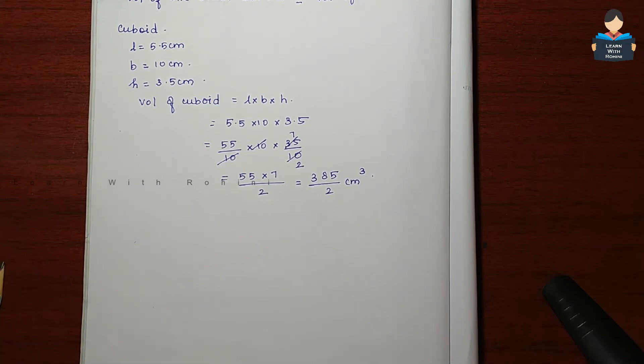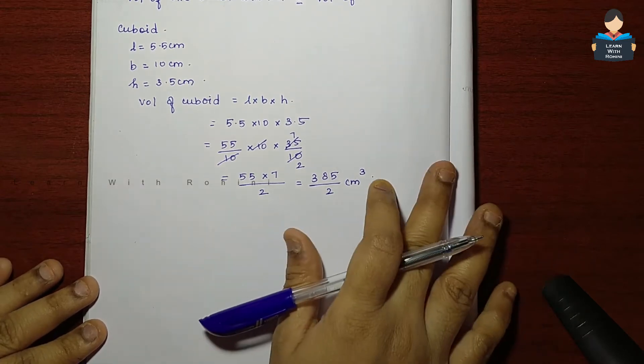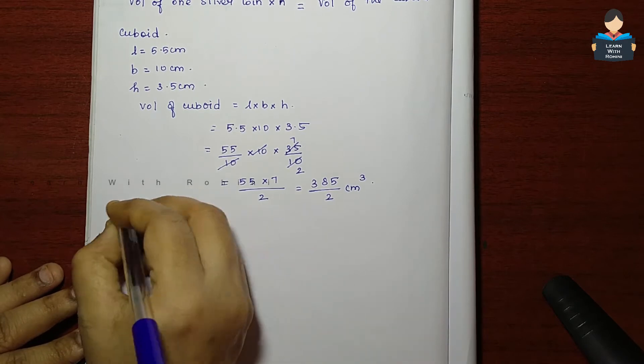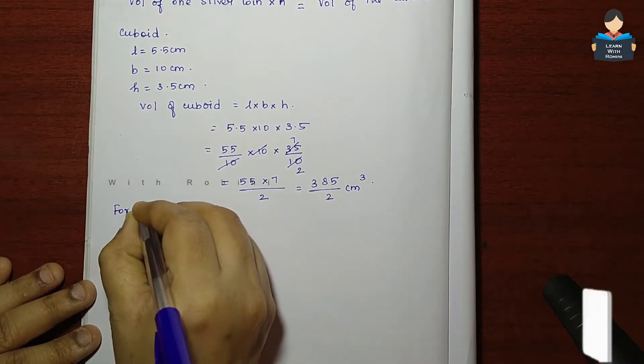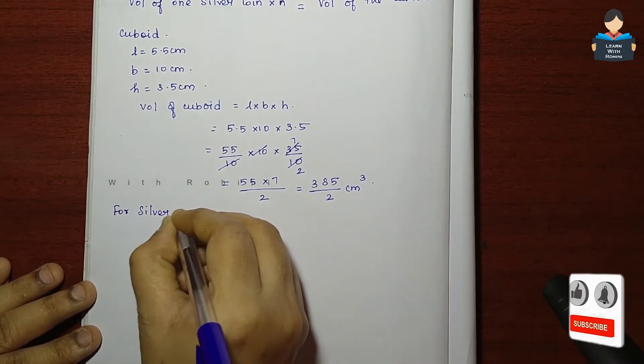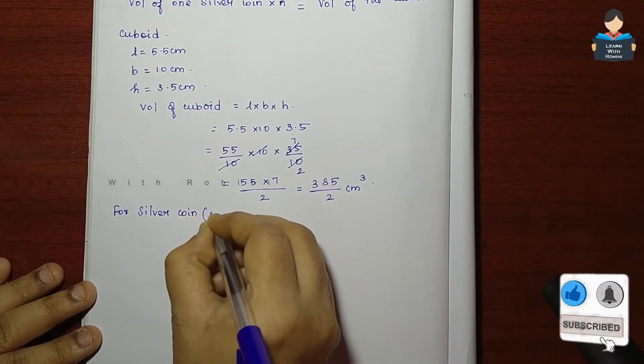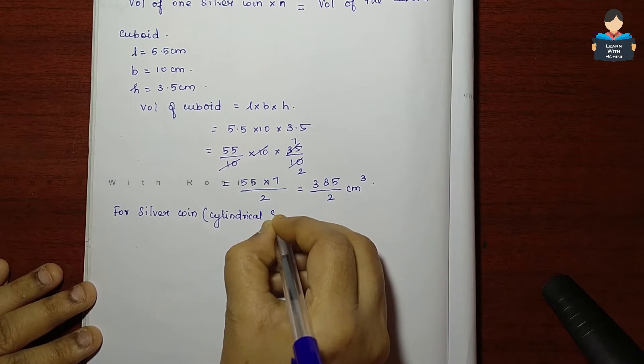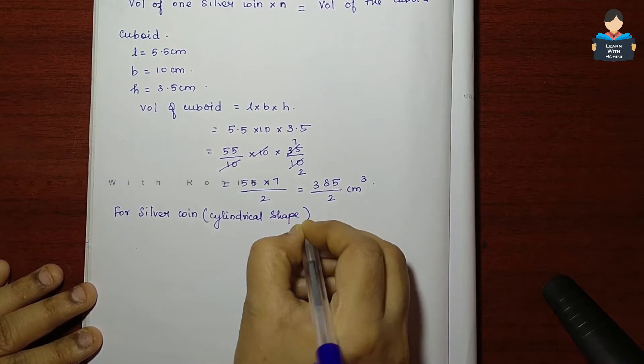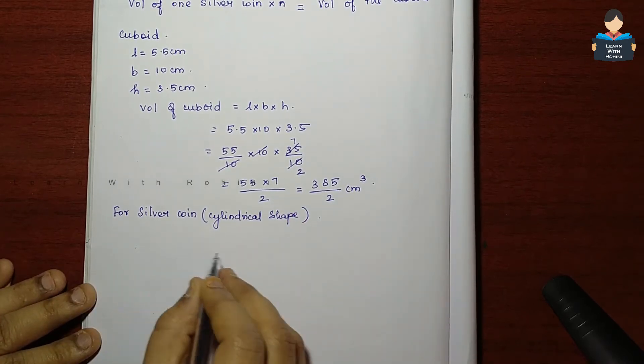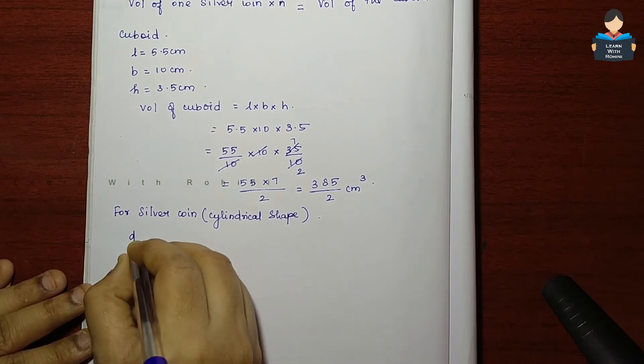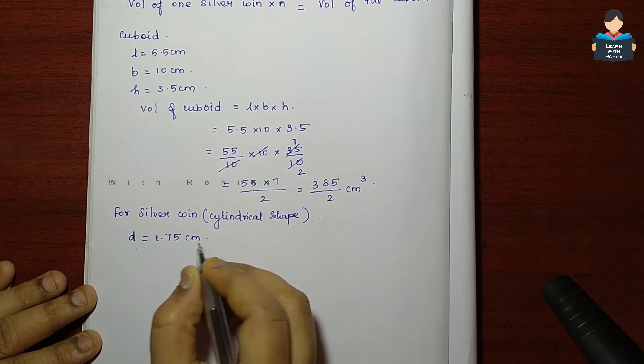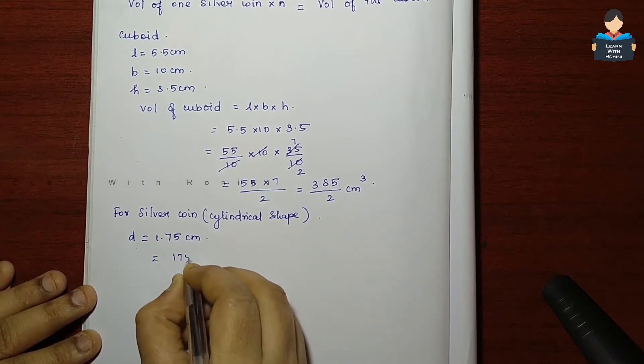Volume of one silver coin, which is in the shape of a cylinder. The silver coin has a cylindrical shape, so volume of one silver coin.